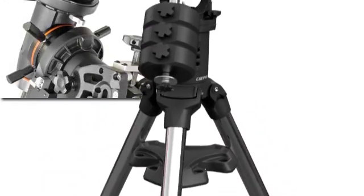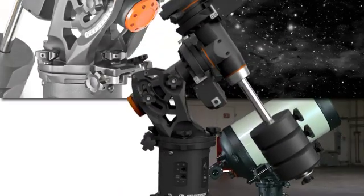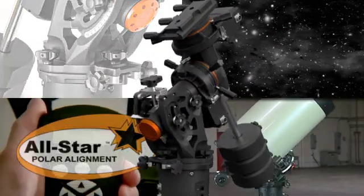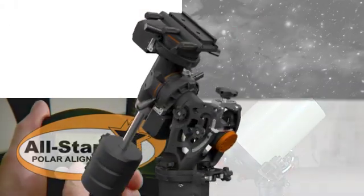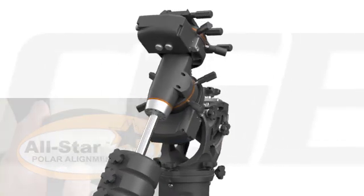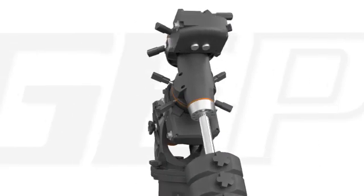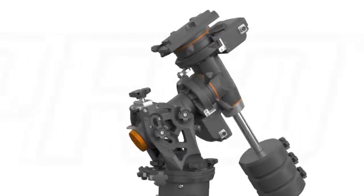With increased payload capacity, faster slew speeds, more accurate tracking, and the groundbreaking all-star polar alignment, Celestron's state-of-the-art CGE Pro German Equatorial Mount is a highly capable, reliable, and accurate platform designed to fit the needs of any serious observer or astrophotographer.